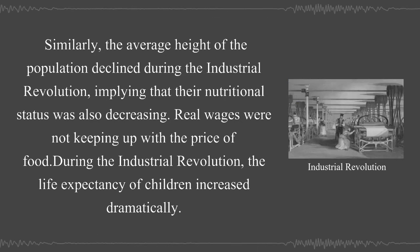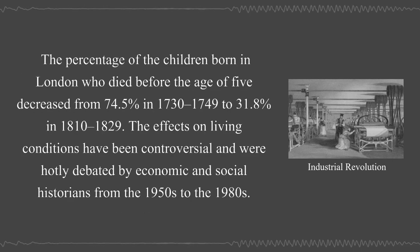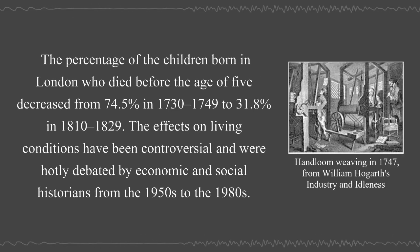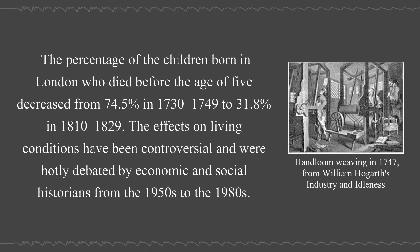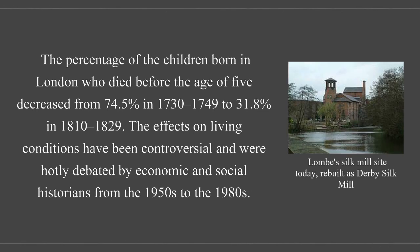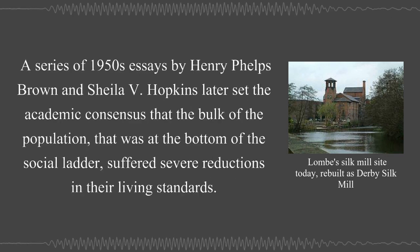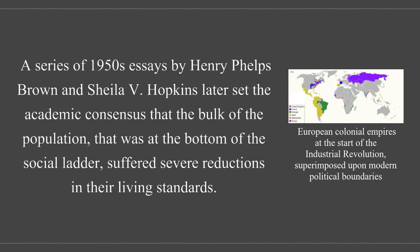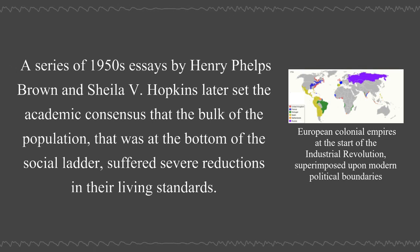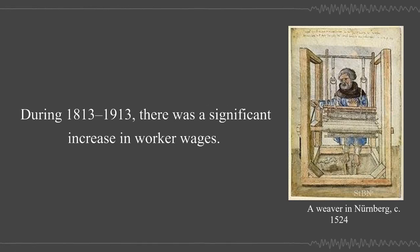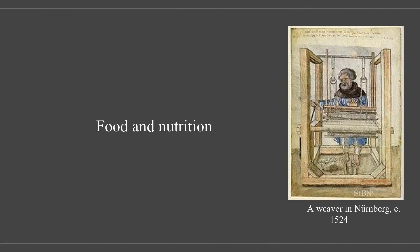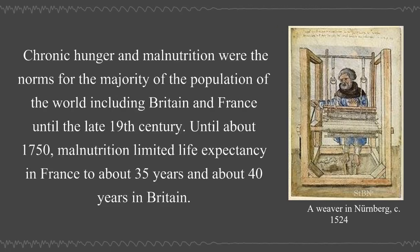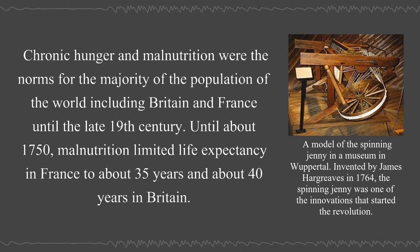During the Industrial Revolution, the life expectancy of children increased dramatically: the percentage of children born in London who died before the age of five decreased from 74.5% in 1730–1749 to 31.1% in 1810–1829. The effects on living conditions were hotly debated by economic and social historians from the 1950s to the 1980s. A series of essays by Henry Phelps Brown and Sheila Hopkins later set the academic consensus that the bulk of the population at the bottom of the social ladder suffered severe reductions in their living standards. During 1813–1913, there was a significant increase in worker wages. Chronic hunger and malnutrition were the norms for the majority of the population of the world, including Britain and France, until the late 19th century.